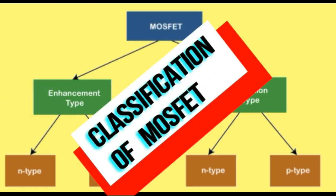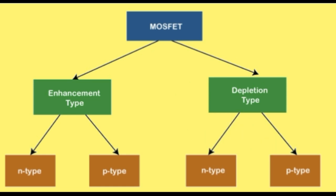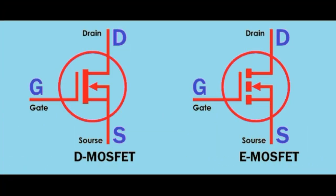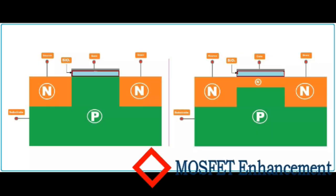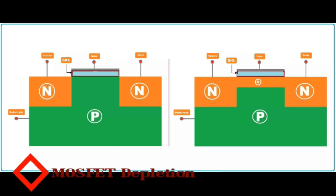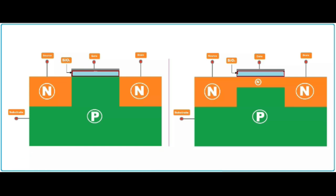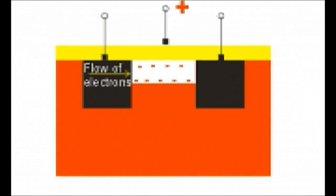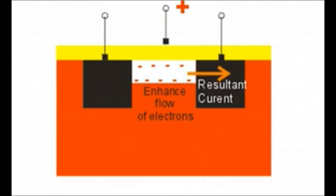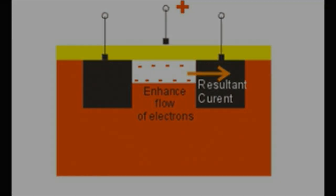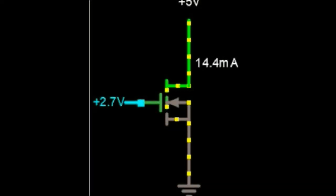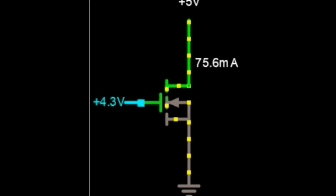MOSFET transistors are divided into two categories: Enhancement MOSFET and Depletion MOSFET. In Enhancement MOSFET, no channel is created in advance between the drain and the source. By applying the appropriate voltage to the gate, the current-passing channel is created. The width of the channel depends on the voltage level applied to the gate, and as a result, the current passing through it can be controlled.